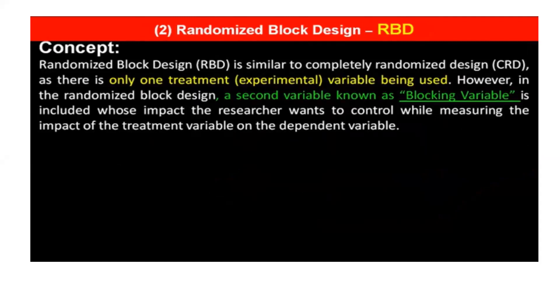However, in the randomized block design, a second variable known as the blocking variable is included, whose impact the researcher wants to control while measuring the impact of the treatment variable on the dependent variable.